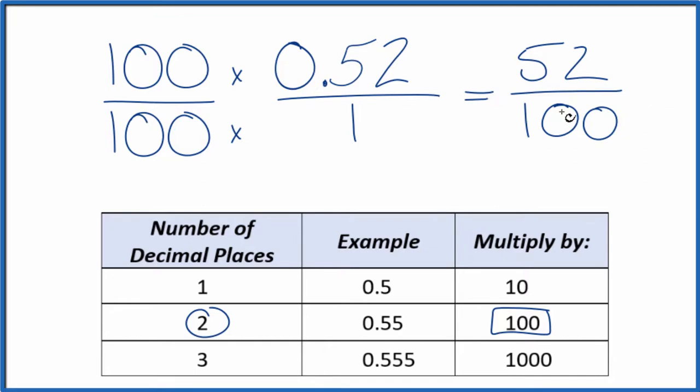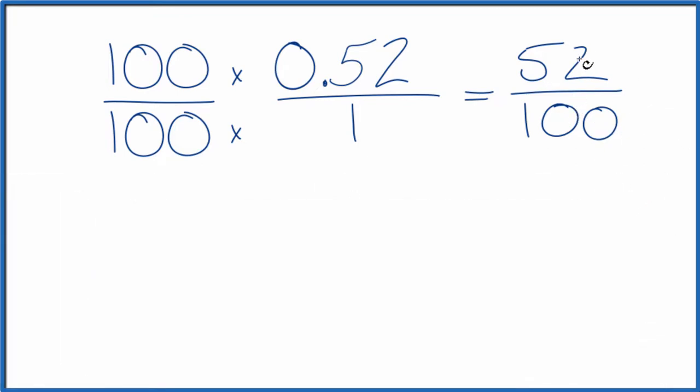But we can simplify this further. Let's give ourselves some room. So 52 and 100, they're even numbers. Let's divide both of them by 2. 52 divided by 2, that's 26. 100 by 2 is 50.